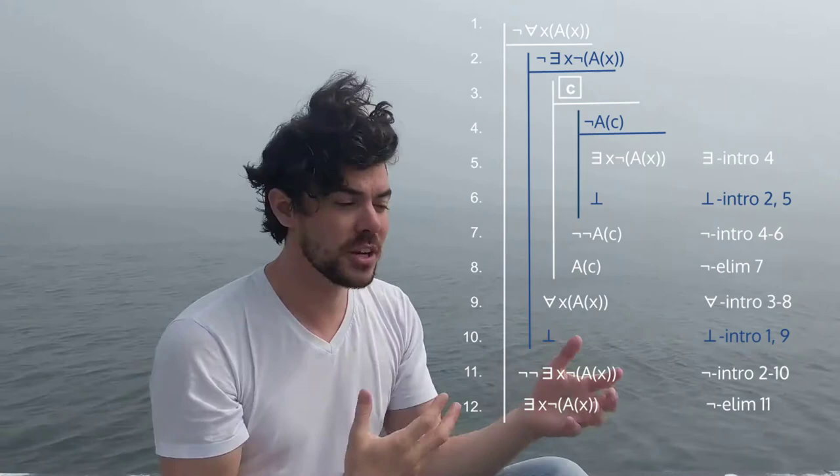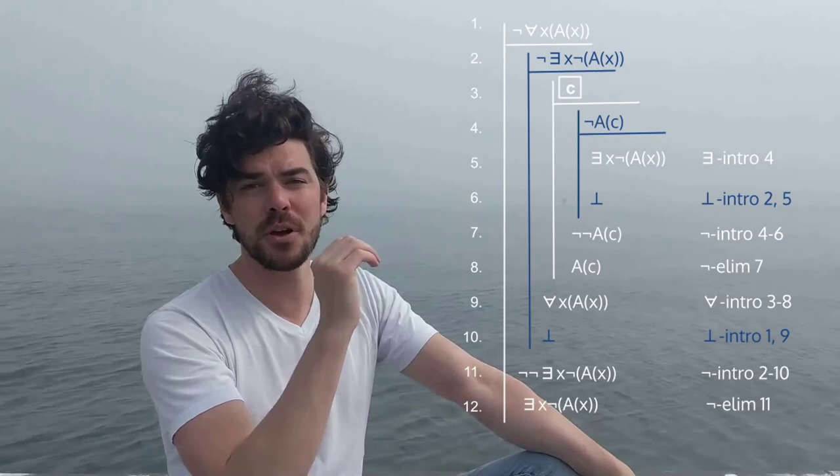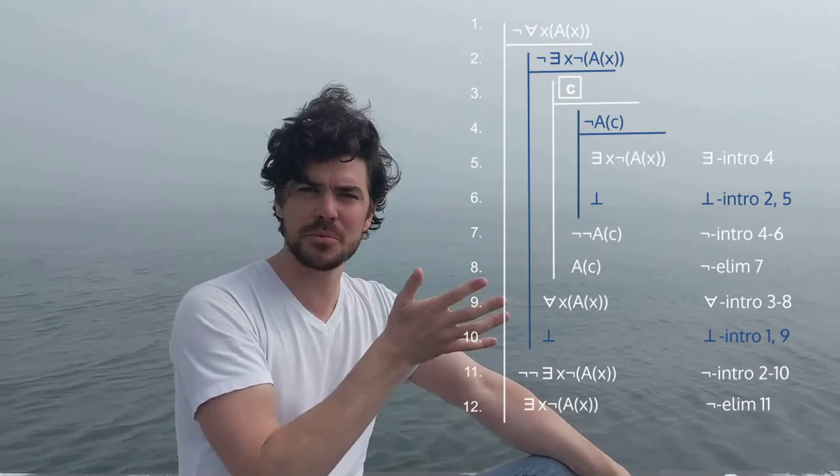So the intuitionists are also syntactically consistent in their rejection of the inference from 'not all' to 'some not,' because the proof of this inference relies on reductio ad absurdum, which, as we've already seen, they reject for their own reasons.